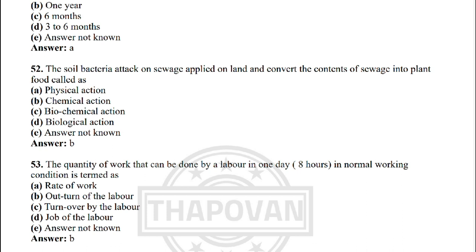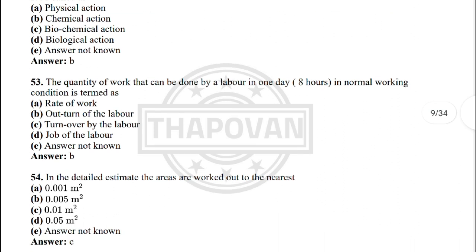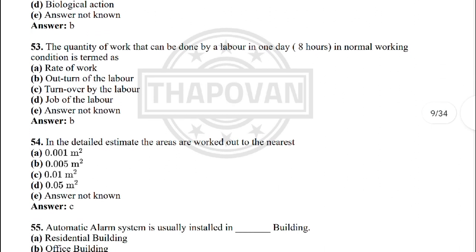Next: soil bacteria attack on the sewage applied on land and convert the content of the sewage into plant food — the correct answer is option B: chemical action. Next: the quantity of work that can be done by a labourer in one day (8 hours) in normal working condition is termed as — option B: out-turn of the labour.